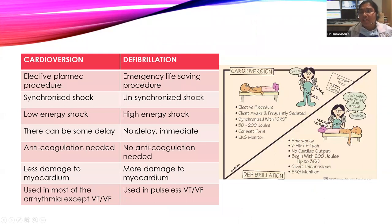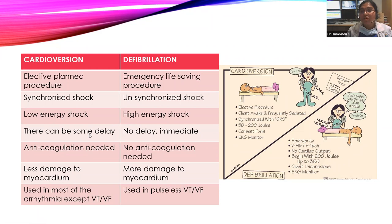Key differences between cardioversion and defibrillation: cardioversion is an elective, planned procedure; defibrillation is an emergency life-saving procedure. Cardioversion is a synchronized, low-energy shock (starting 50–100 J); defibrillation is an unsynchronized, high-energy shock (above 120 J). Cardioversion may have some delay in stable patients; defibrillation should have no delay. Elective cardioversion requires prior anticoagulation; defibrillation does not. Cardioversion causes less myocardial damage. Cardioversion is used for most arrhythmias except VT and VF; defibrillation is used for pulseless VT and VF.